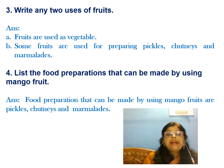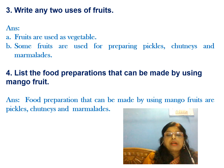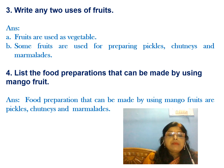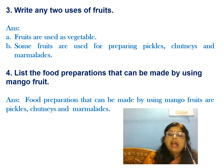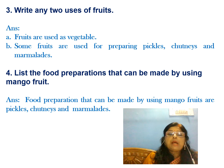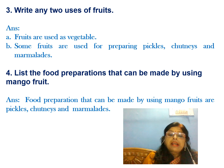Next question: write any two uses of fruits. Fruits are used as vegetables, and some fruits are used for making pickles, chutney, and marmalades. During different seasons, different types of fruits are obtained, so different types of preparations can be made with the help of each fruit.